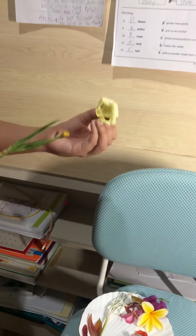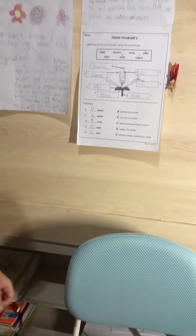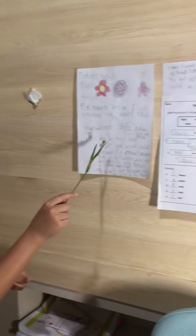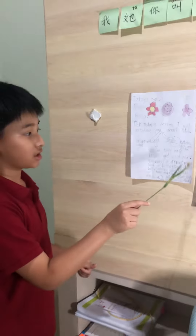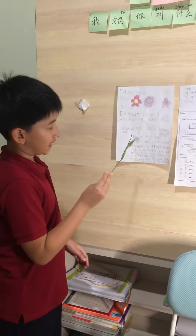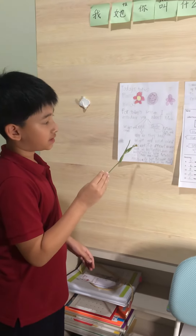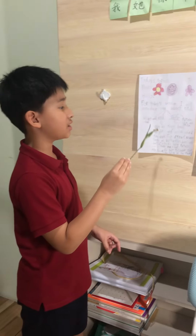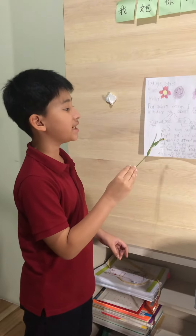Now I have a question for you about the color. Why do they have bright and vivid colors? Can someone answer this question for me? The answer is to attract pollinators such as butterflies, bees, and bats.